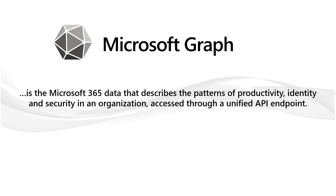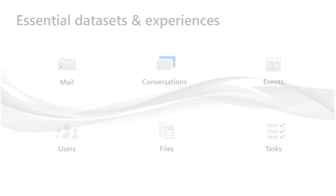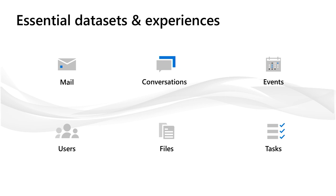Perhaps the simplest way to describe Microsoft Graph is this: Microsoft Graph is the Microsoft 365 data that describes the patterns of productivity, identity, and security in an organization, accessed through a unified API endpoint. Microsoft Graph data is what we use at Microsoft to power the experiences we create everywhere in our products. Graph helps us create so much of that shared richness, context, and content that makes your workday easier, safer, more focused, more seamless, and ultimately more productive across the devices you use, whether they're running Windows, iOS, or Android.